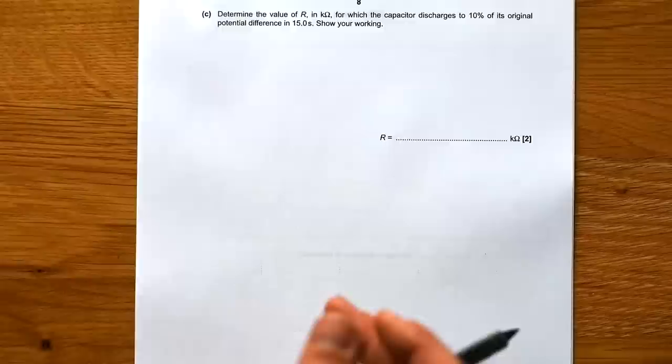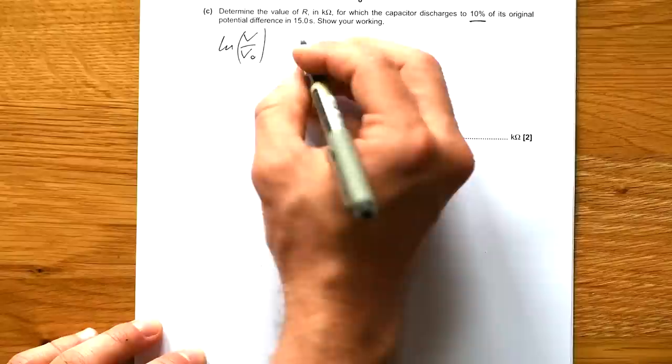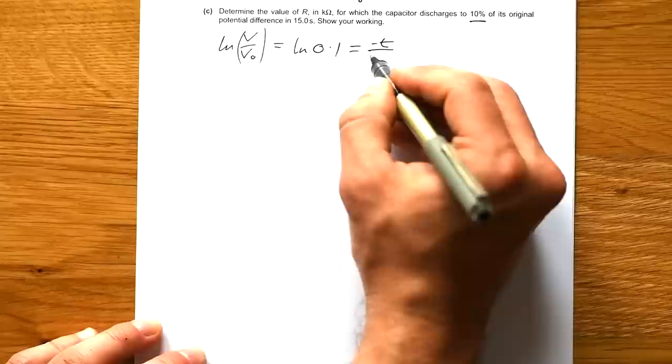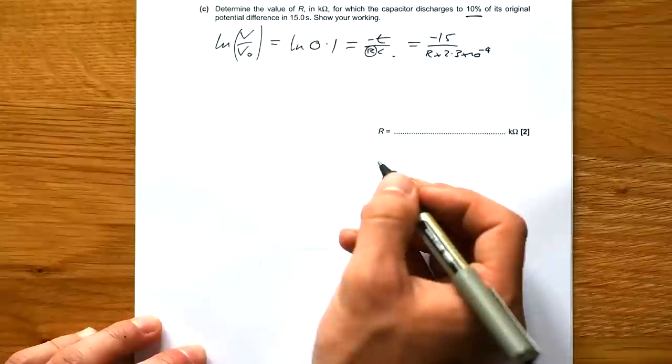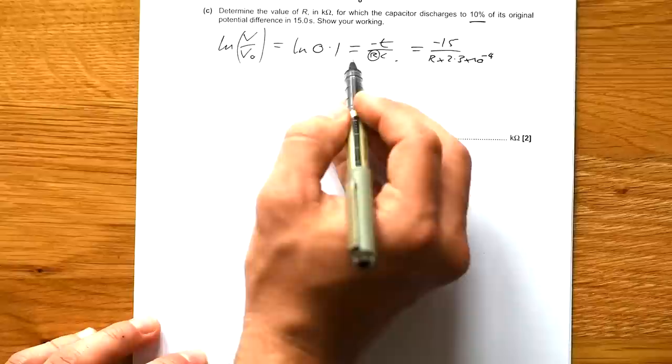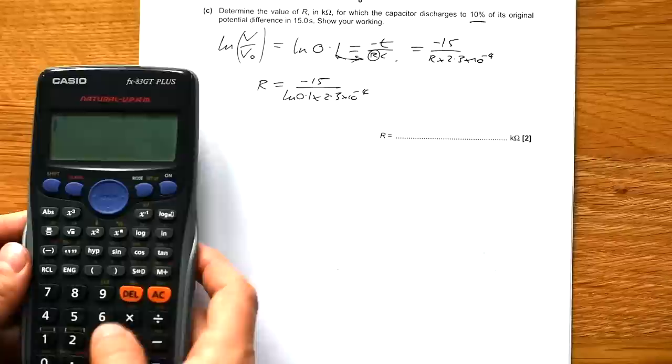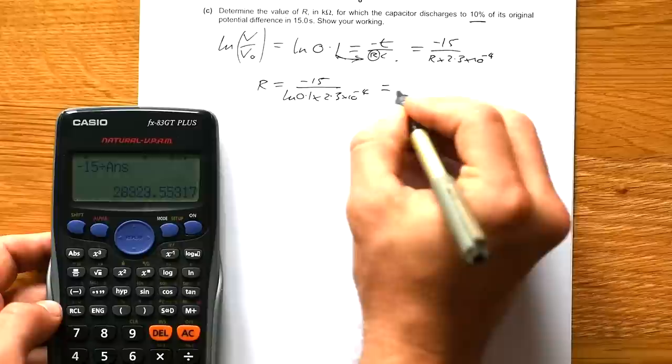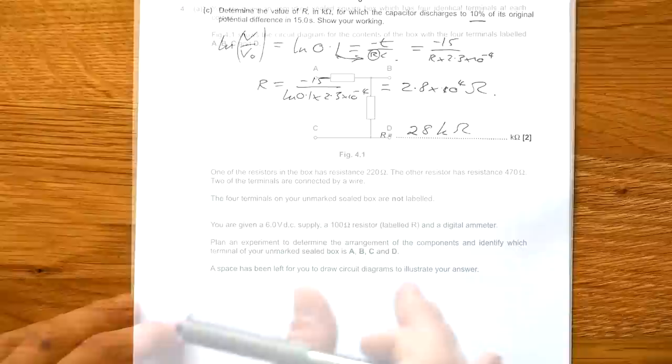Finally, determine the value of R in kiloohms for which the capacitor discharges to 10% of its original potential difference in 15 seconds. So we're looking for 10%. So that's log of V over V0. This is going to be 10%. So that's log of 0.1. And that is equal to minus T over RC. But we're looking for a resistance where this is 15 and the capacitance is 2.3 times 10 to the minus 4. So all we have to do is swap these two things over. So we have a resistance equals minus 15 over log of 0.1 times 2.3 times 10 to the minus 4. Let's do the bottom bit first. Let's do the minus anyway. That gives us 2.8 times 10 to the 4 ohms, or in other words, 28 kiloohms.